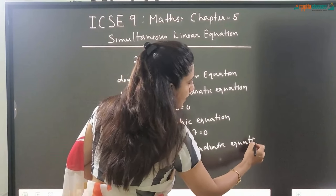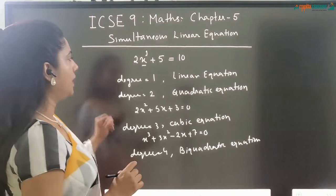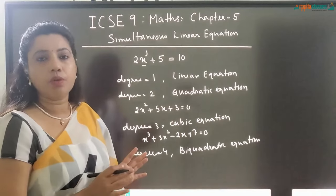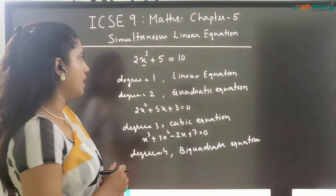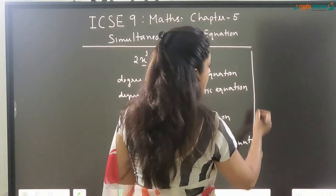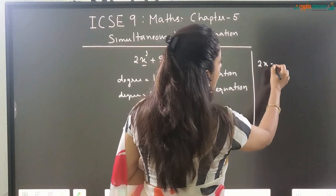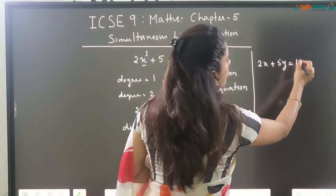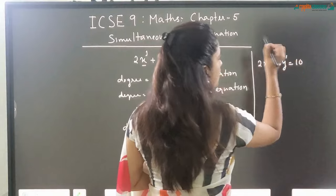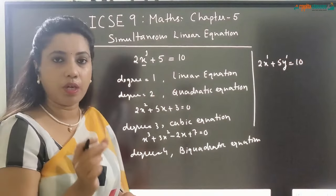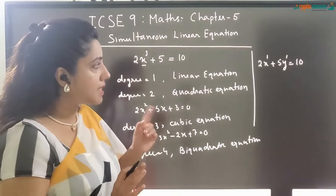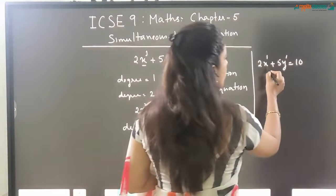The name of the equation depends on the degree of the polynomial. If the degree is 1, we call it a linear equation. Today in this chapter, we are going to study linear equation with two variables. In the previous example there was only one variable, but if I write an equation like 2x plus 5y is equal to 10, here x has degree 1 and y also has degree 1. Both variables have degree 1, so the entire polynomial has degree 1 — this is a linear equation with two variables.